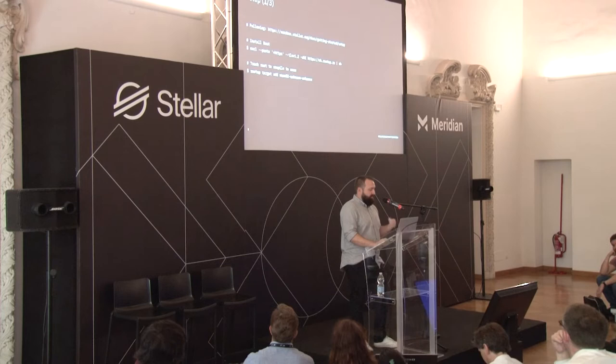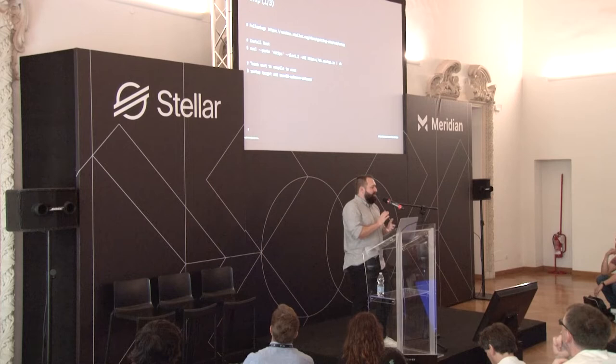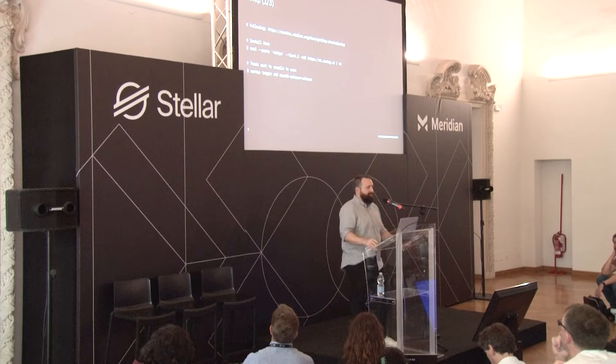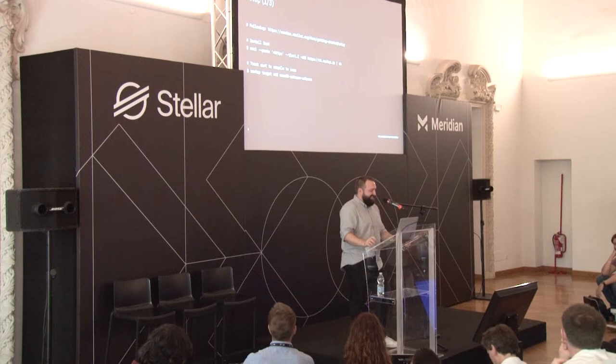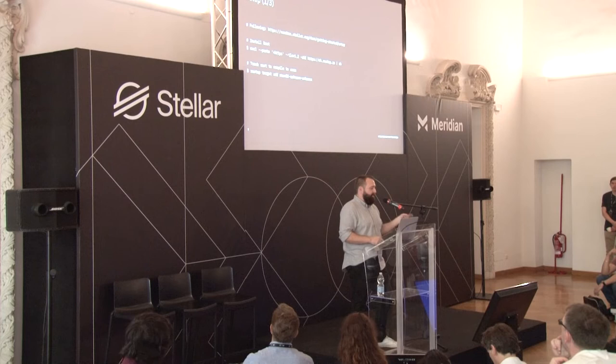Let's get your environment set up. Smart contracts in Soroban are written in WebAssembly. That means you can technically write them in any language that compiles to WebAssembly — like TinyGo, AssemblyScript, Zig, Rust, or whatever. The official SDK right now is in Rust. The upside is the whole stack is written in Rust: the Soroban runtime, the backend, and the smart contracts themselves. This is just the standard Rust install script from Rustup.